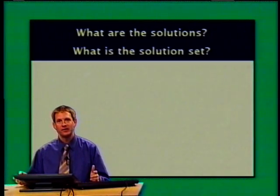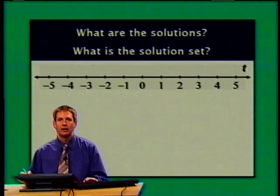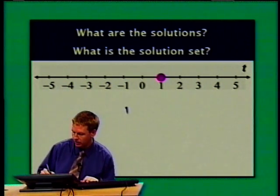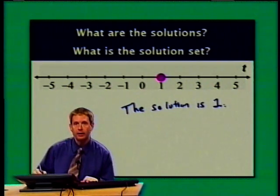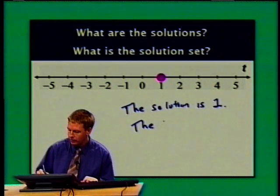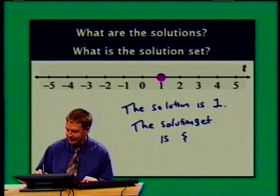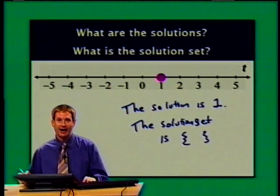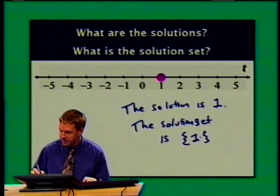Here's our t number line — the only solution was the point 1. So the solution is the number 1. However, the solution set is not a number; it's a set. Specifically, it's the set whose only element is the number 1.